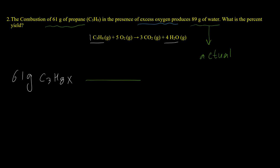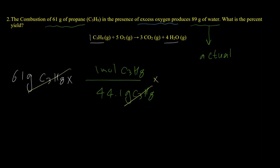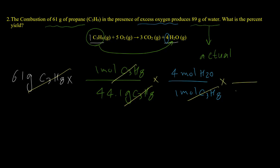First, I need to convert grams of propane to moles of propane: 1 mole of propane is 44.1 grams, which we calculate using the periodic table with the masses of carbon and hydrogen. Next, based on the equation, 1 mole of propane equals 4 moles of water. Finally, we convert moles of water to grams using the molar mass of water, which is 18.01 grams per mole.